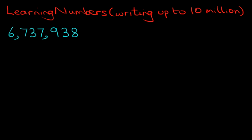So there is our number in numerals. The first step is to read this out aloud, because how you say it is the way you write it. So let's do that. It is 6,737,938. So let's begin writing this. We always start on the left-hand side.